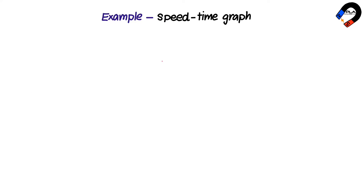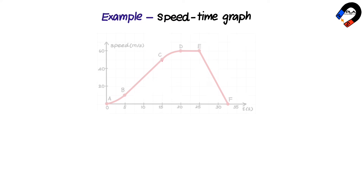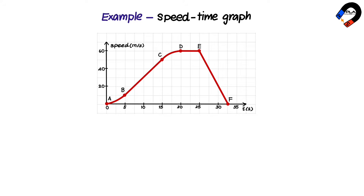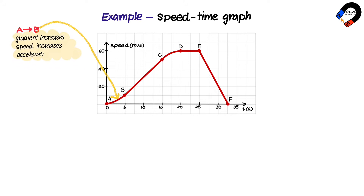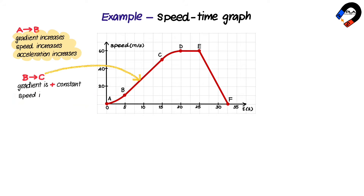In the example speed-time graph shown, between A and B the gradient is increasing, so the speed is also increasing with increasing acceleration. Between B and C, the gradient is positive and constant, so the speed is also increasing with constant acceleration.